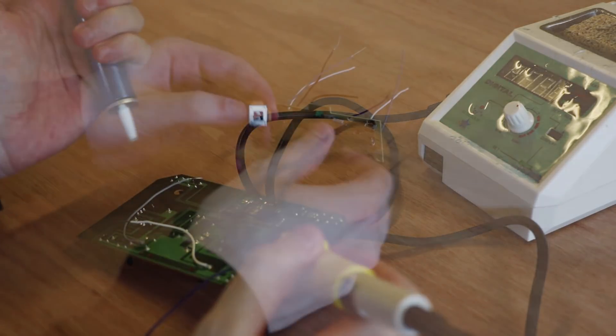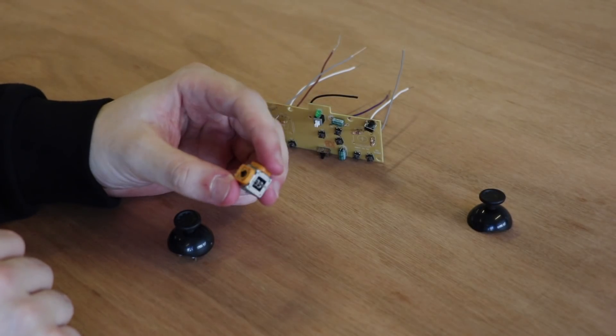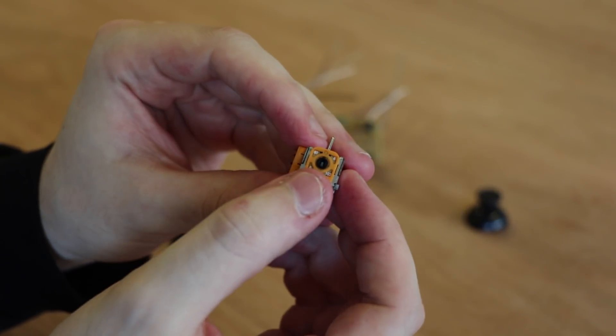Use a desoldering pump or braided copper wire to remove the tin from the PCB to disconnect the joysticks. You will end up with something like this.